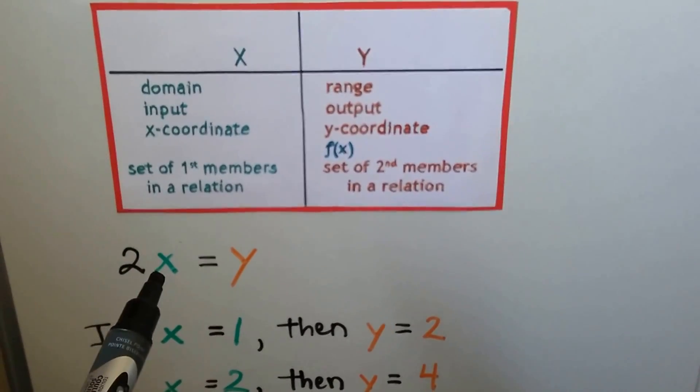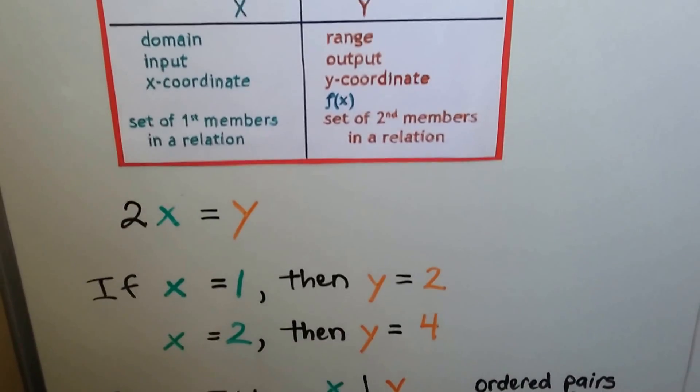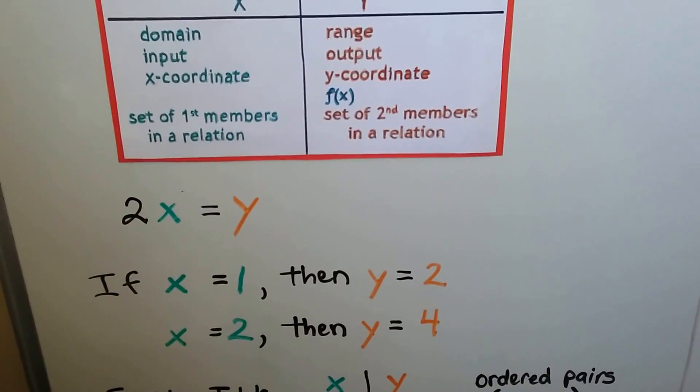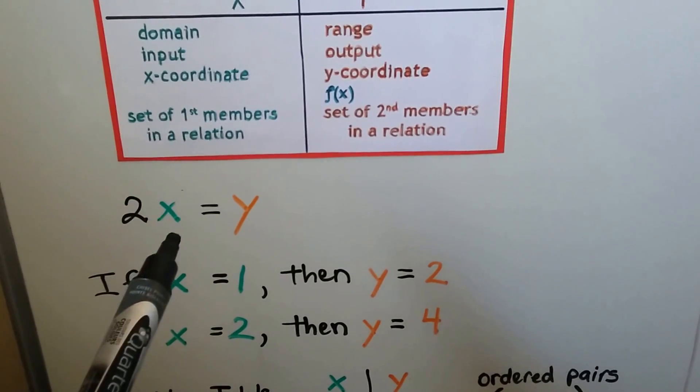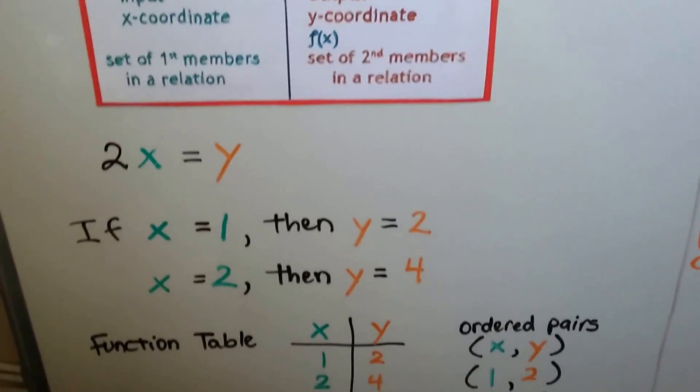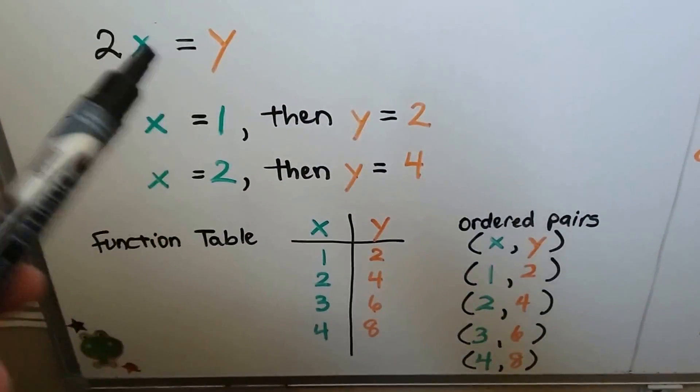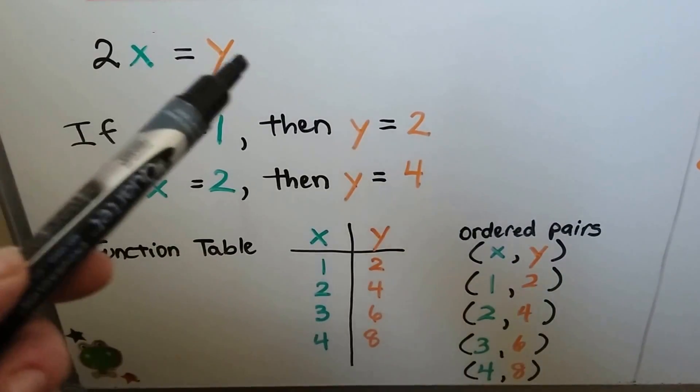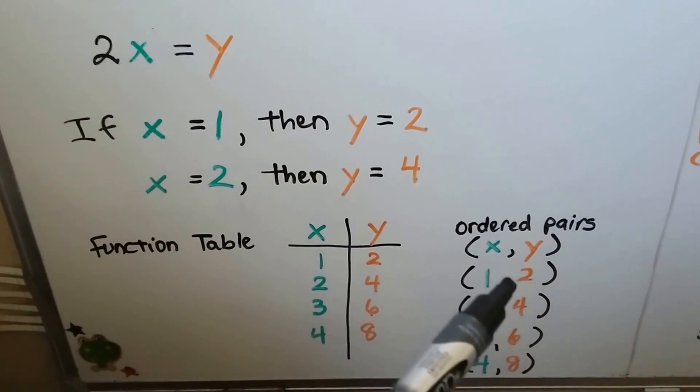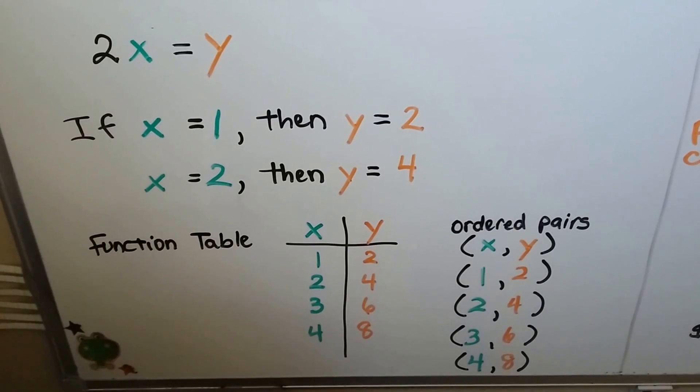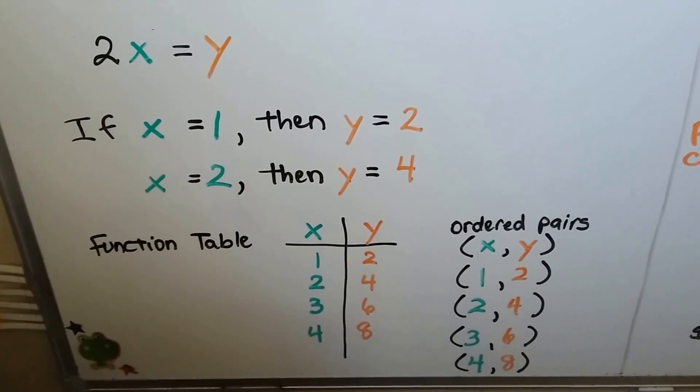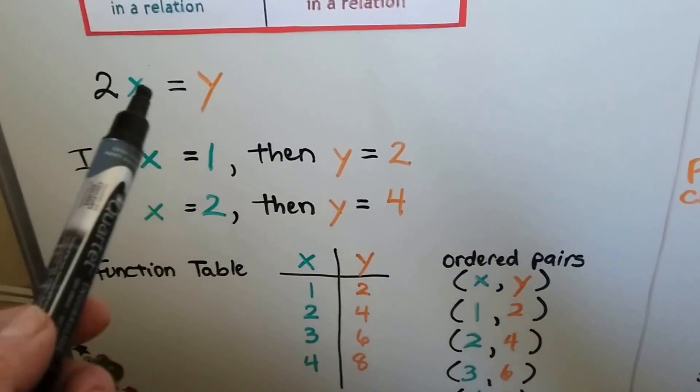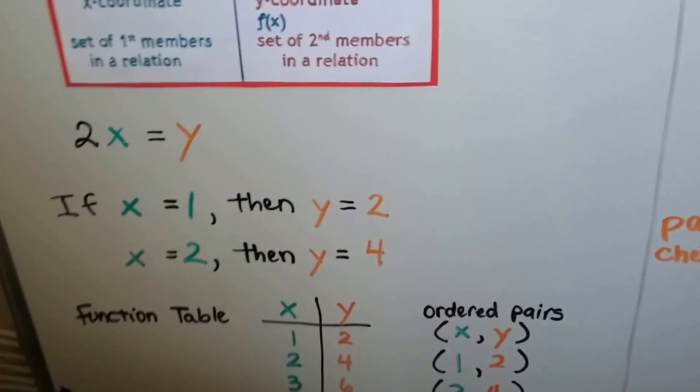Depending on the value of x, it's going to change the value of y. If x is 1, then y is 2. 2 times 1 is 2. If x is 2, 2 times 2 is 4, y is 4. We can make a function table of values that'll make this true, and they'll become our ordered pairs. As x changes, it affects the value of y.